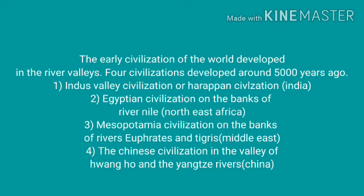The early civilizations of the world developed in the river valleys. Four civilizations developed around 5000 years ago: the Indus Valley or the Harappan Civilization in India; the Egyptian Civilization on the banks of the river Nile in North East Africa; the Mesopotamian Civilization on the banks of the rivers Euphrates and Tigris in the Middle East, around Iraq; and the Chinese Civilization in the valley of the Huang He and the Yangtze River in China.